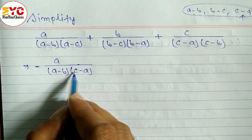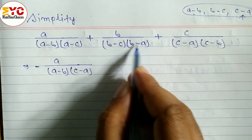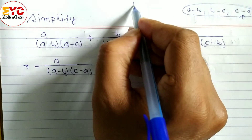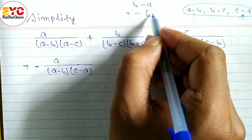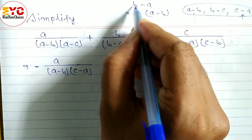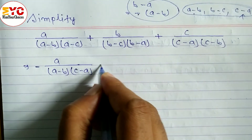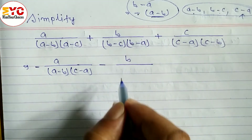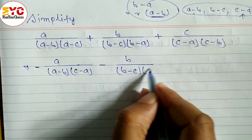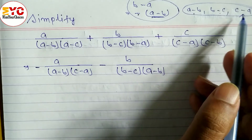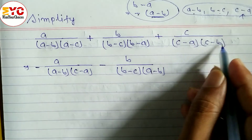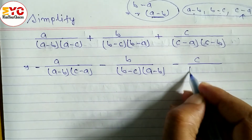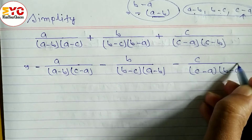For the second term: we have b minus a but need a minus b, so we take minus common — minus times a gives minus a, minus times minus b gives plus b — giving a minus b. We write minus b over (a minus b)(b minus c). For the third term: we have c minus b but need b minus c, so we take minus common, interchange, writing minus c over (c minus a)(b minus c).